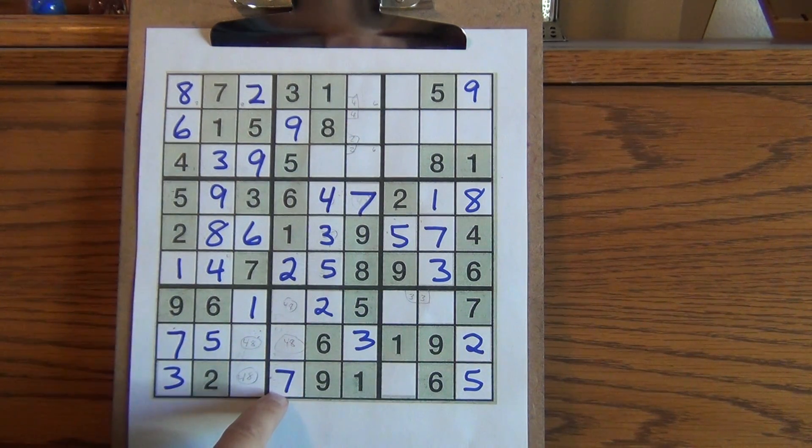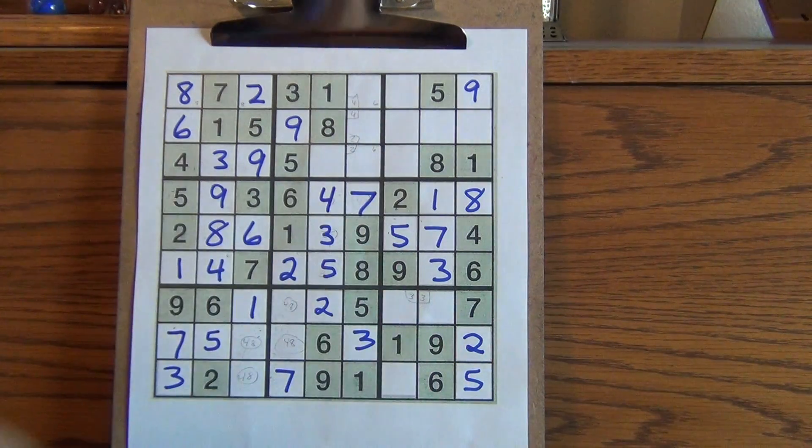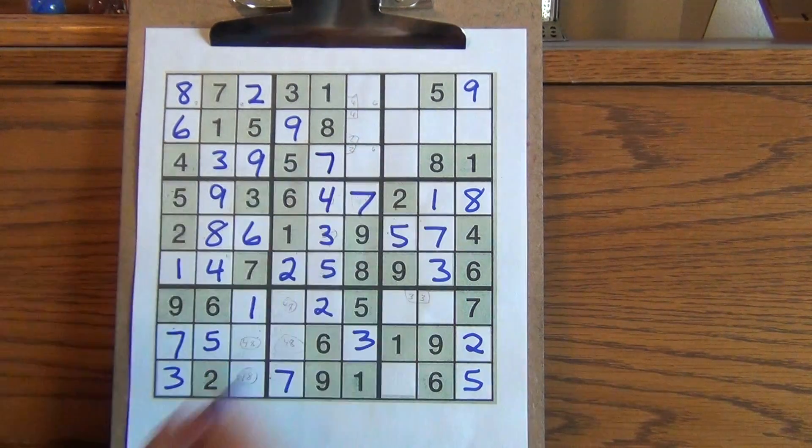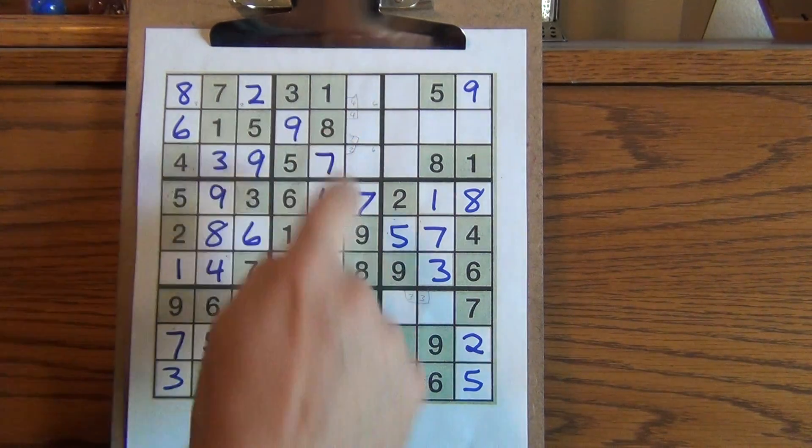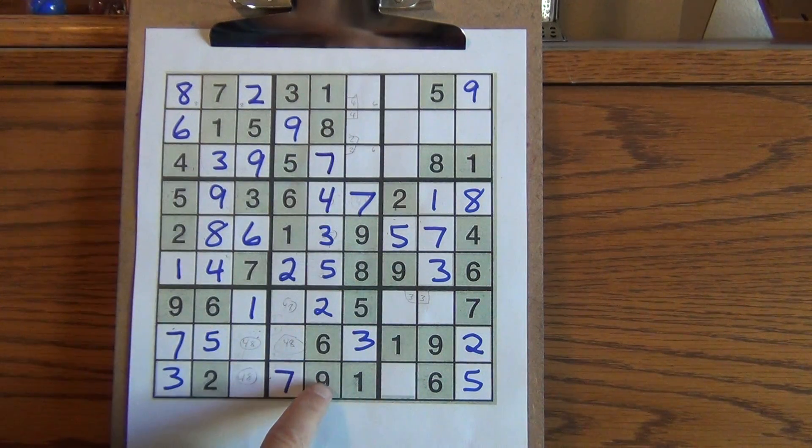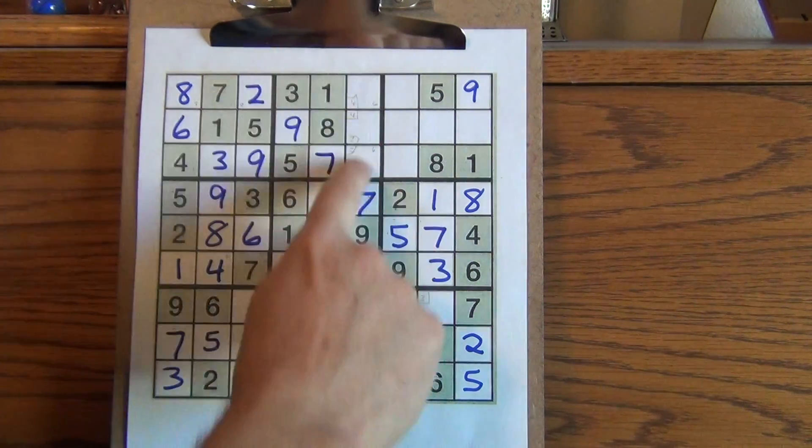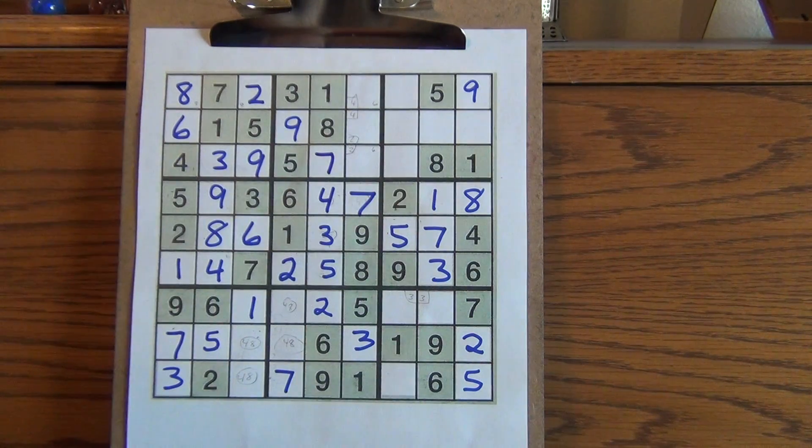Seven is left, right, middle. This must be a seven. Eight, well, we can see it's got to be left, right, middle. Nine must be here, here, here. So I have those three left. I'll leave them and come back later.